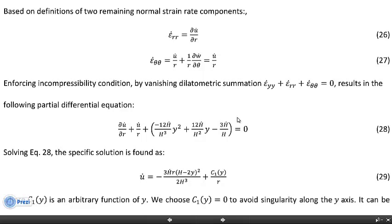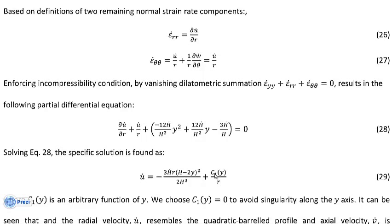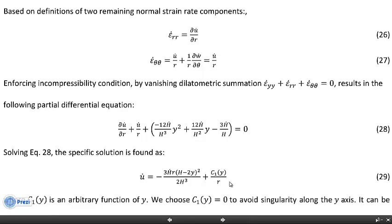To find u-dot, we use the incompressibility condition: the dilatometric summation of all strain rate components must equal zero. This leads to a differential equation. Solving it, u-dot has both a general and a particular solution, but the solution is singular along the centerline. To avoid the singularity we set the arbitrary constant c1 equal to zero, so u-dot is just the first term — a quadratic that resembles the barrel geometry.